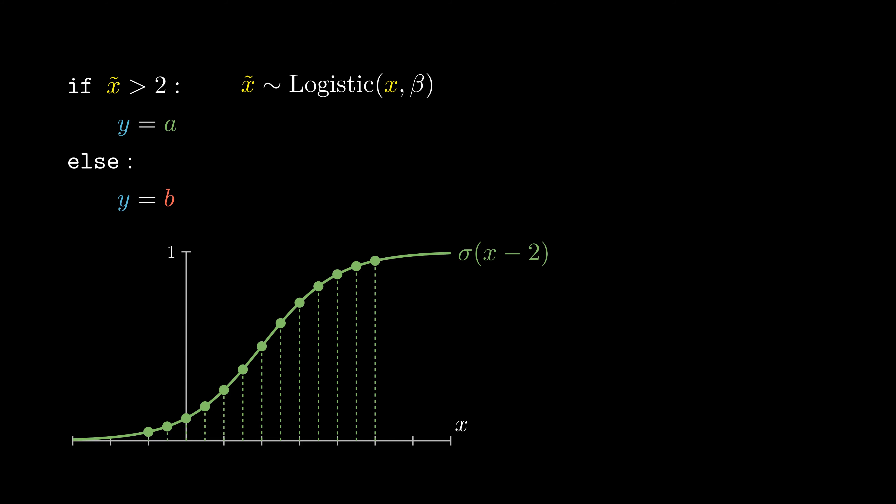With that, we can compute the probability that y is set to a and the probability that y is set to b in closed form. Y is set to a convex combination of a and b, where the weight for a is sigmoid of x minus 2, and the weight for b is 1 minus the weight for a.